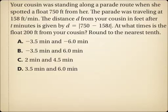The next example says: your cousin was standing along a parade route when she spotted a float 700 feet from her. The parade was traveling at 158 feet per minute. The distance from your cousin in feet after t minutes is given by d equals the absolute value of 750 minus 158t. At what times is the float 200 feet from your cousin? Round to the nearest tenth.